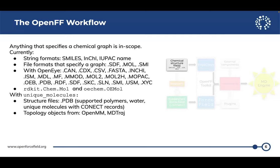One thing we've been struggling with is the loading of PDBs. PDBs sometimes have components or residues that match a set template, so we can look them up from a library — is this supposed to be a double bond? Does that have a formal charge? But oftentimes you've just got a small molecule in a PDB file. We've had some rudimentary functionality for a while, but we're really building out right now the ability to load unrecognized components from PDB files.